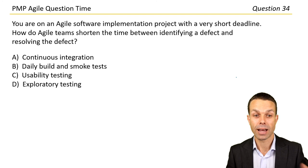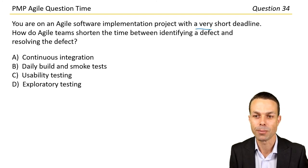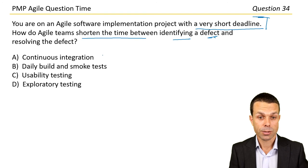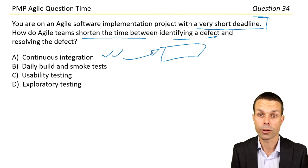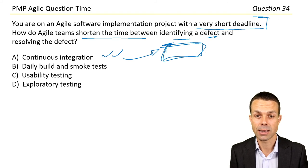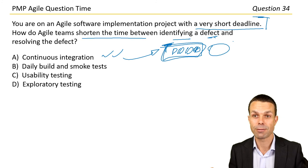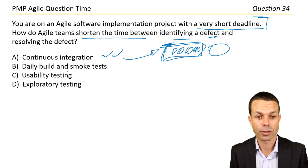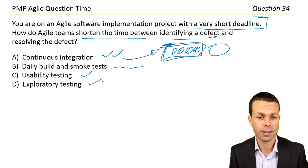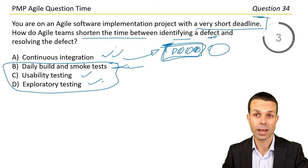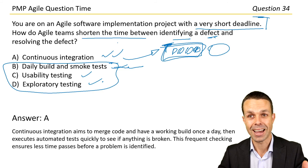You're on an agile project with a very short deadline. How do agile teams shorten the time between identifying a defect and resolving it? Options include: continuous integration; daily build and smoke tests; usability testing; and exploratory testing. Continuous integration is the most likely answer, because all code is merged into a core test build and an automated regression test is run to identify defects quickly.